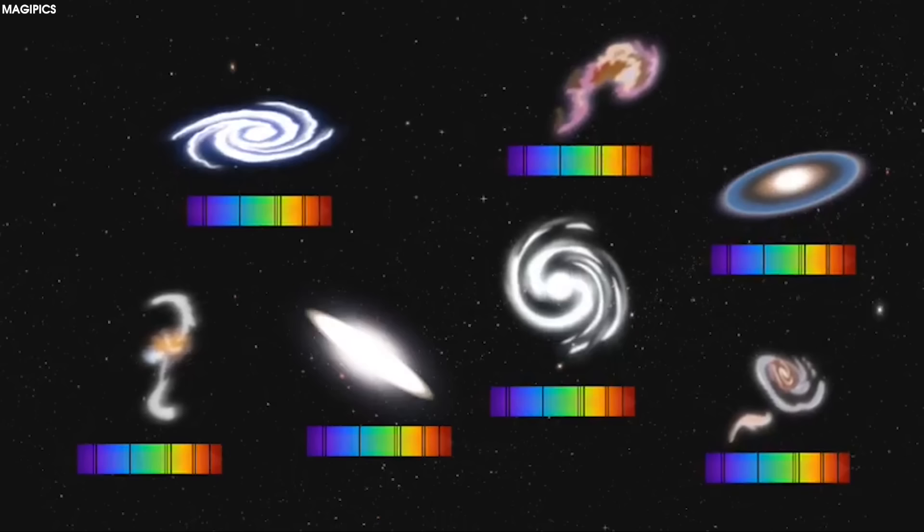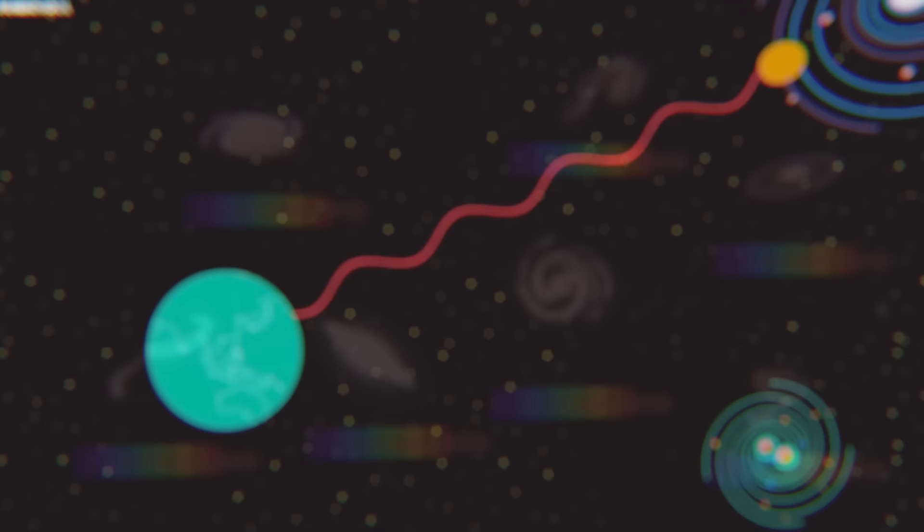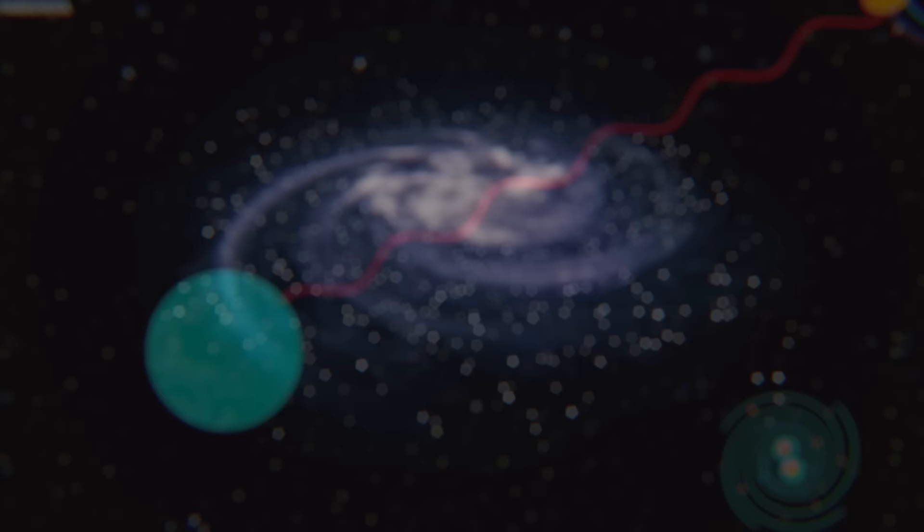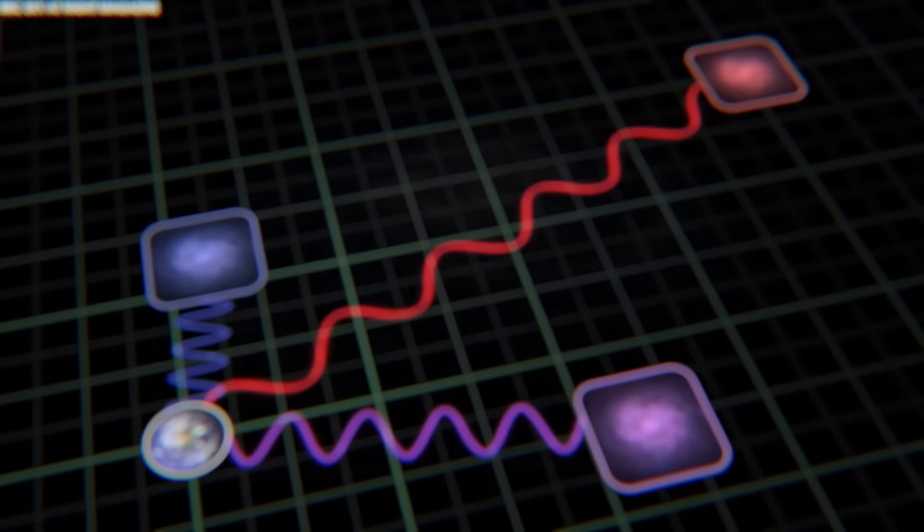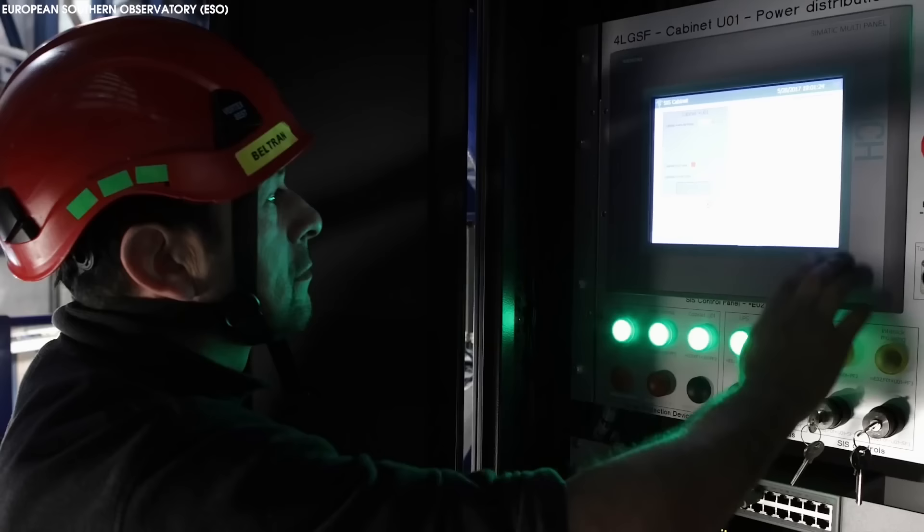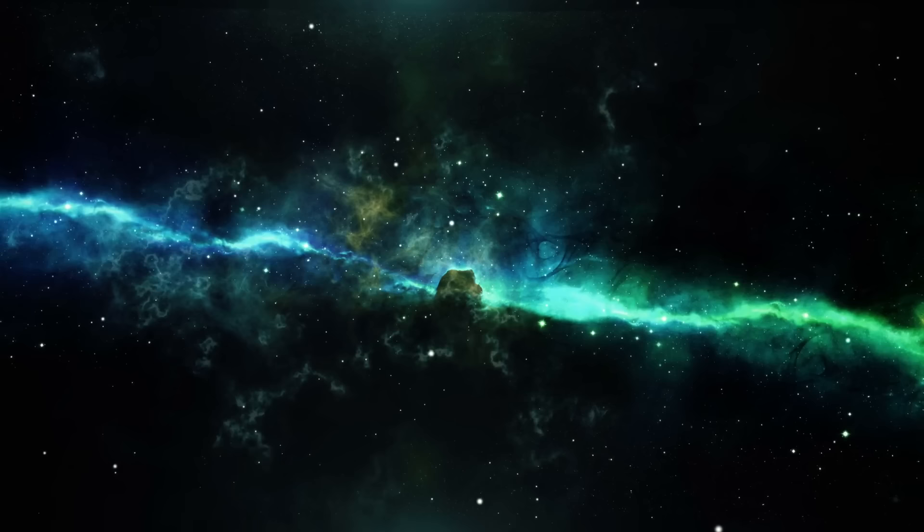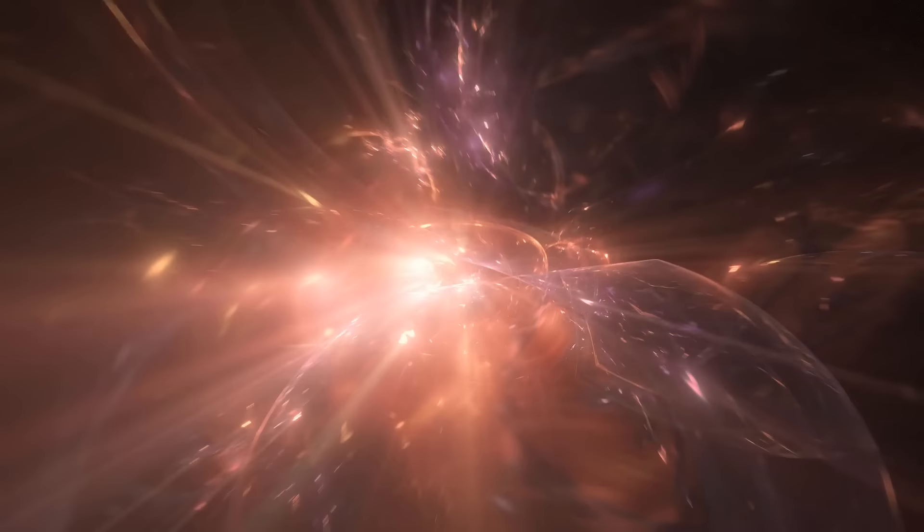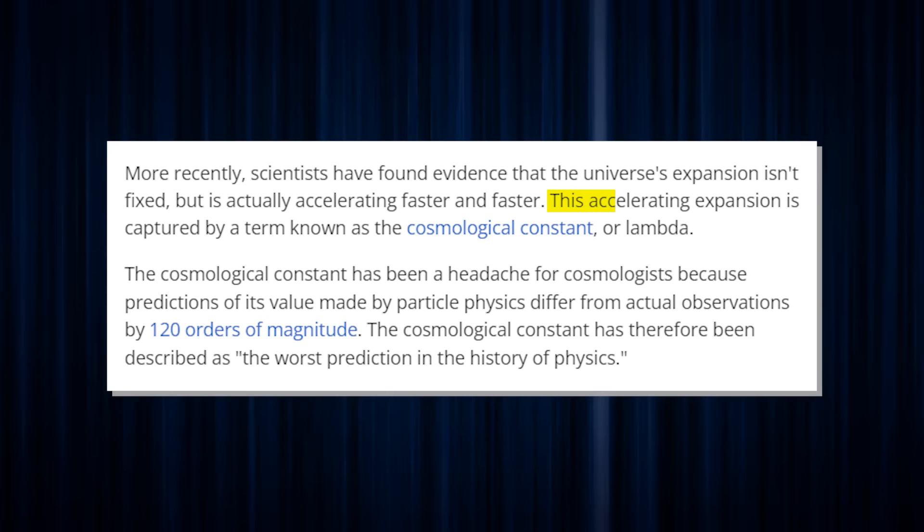Scientists know the universe is expanding because of redshift, the stretching of light's wavelength towards the redder end of the spectrum as the object emitting it moves away from us. Distant galaxies have a higher redshift than those nearer to us, suggesting those galaxies are moving even further from Earth. More recently, scientists have found evidence that the universe's expansion isn't fixed, but is actually accelerating faster and faster.